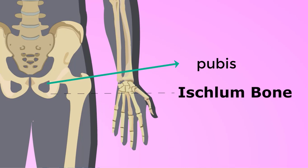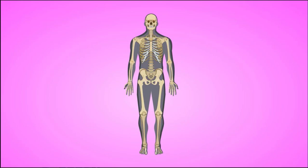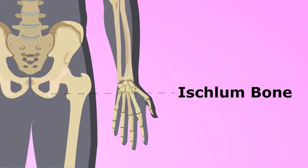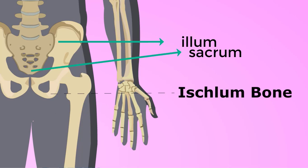The sitting position bone is the base, called the pubis. There are three bones here: ilium, sacrum, and pubis. The ilium is the upper bone, and the sacrum is the back side bone.